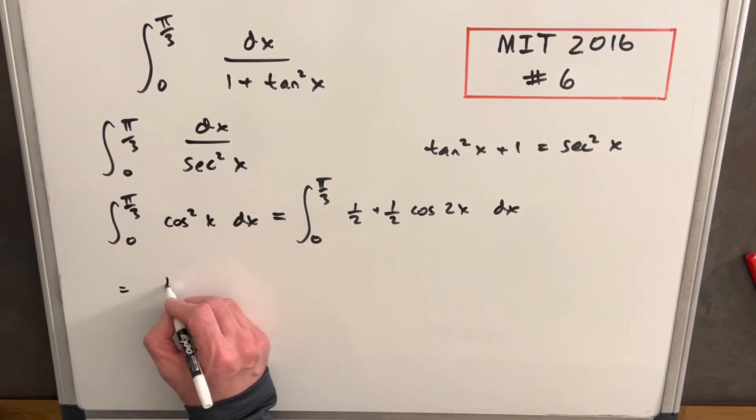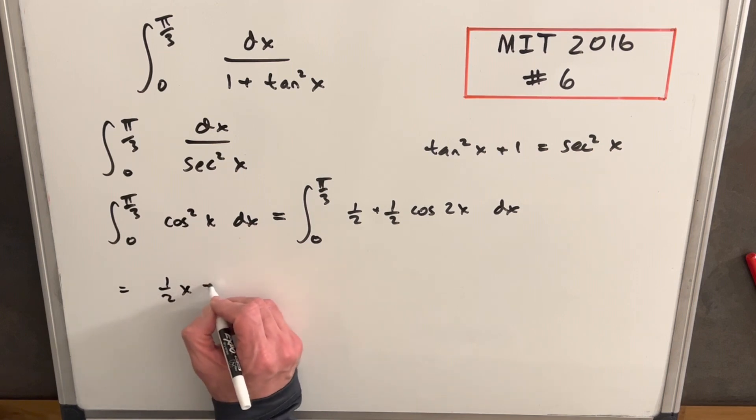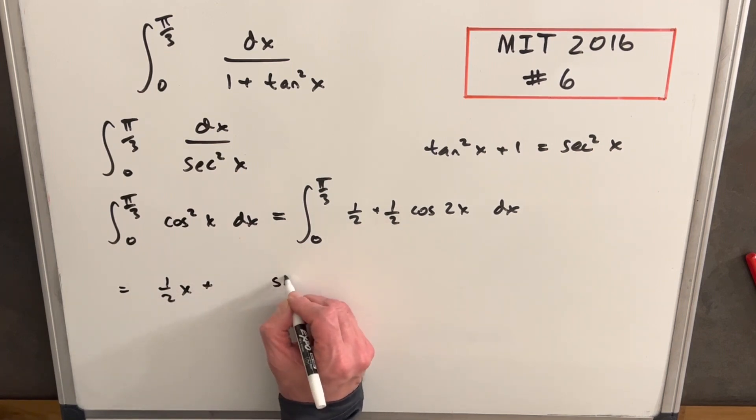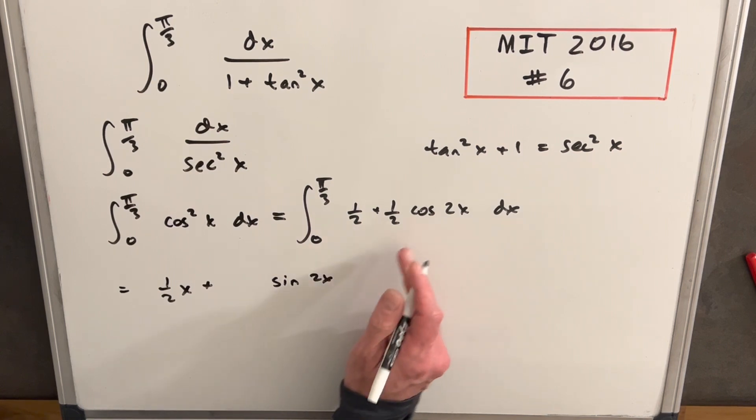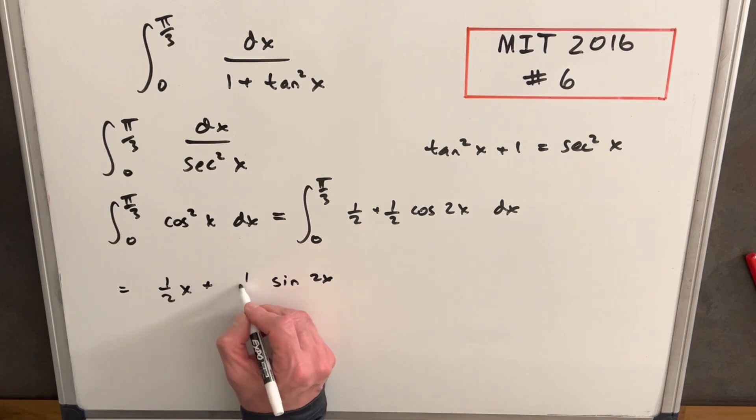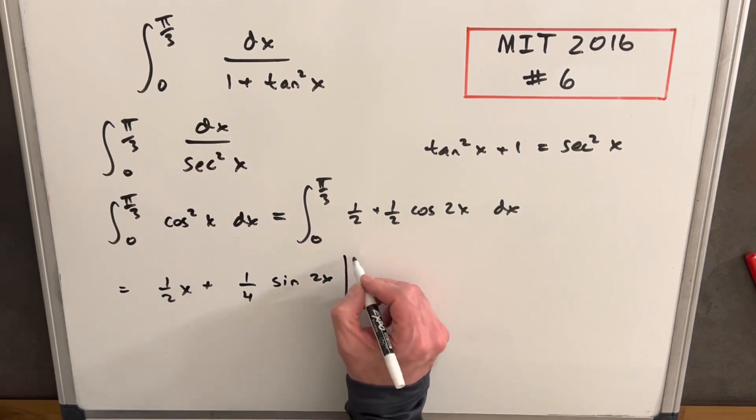So we're going to have integral of half as half x plus integral of cos 2x is going to be sine 2x. But we're going to bring out a 2, or like a half times our half is going to be one-fourth. And then we just need to evaluate this thing from pi over three to zero.